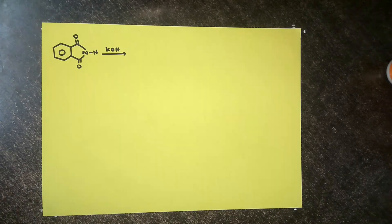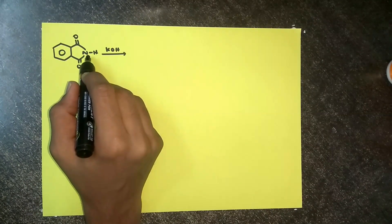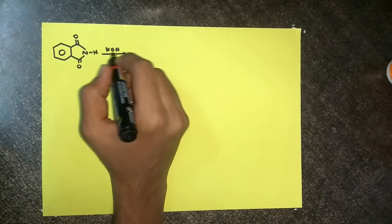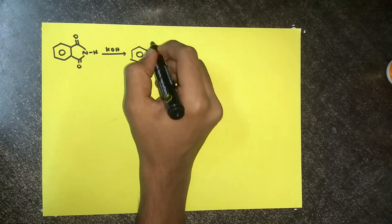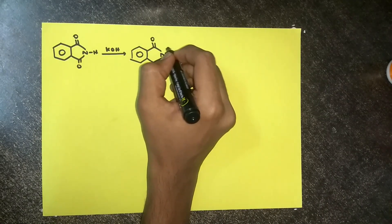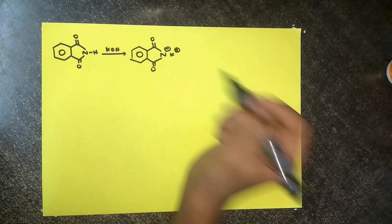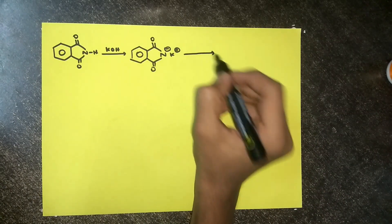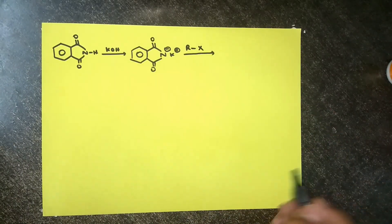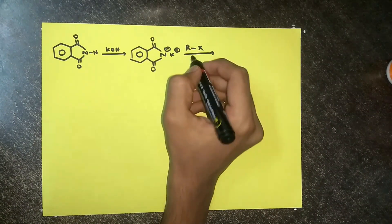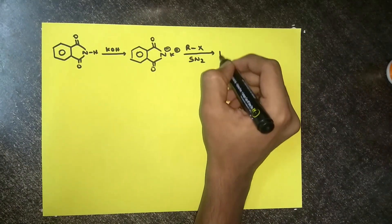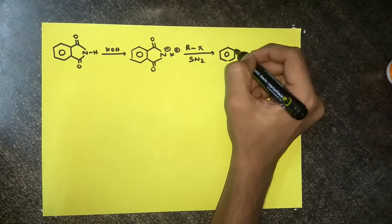Now let's look at the second part of the reaction. In this reaction, we will use the phthalimide formed to convert it into an amine. As the nitrogen here is slightly acidic, we are going to use a strong base to extract this — for example, KOH. This OH- is going to extract the hydrogen and form N-. Now we react this with an alkyl halide. This nitrogen with a negative charge is going to act as a nucleophile and this reaction is SN2. It's going to form an alkyl phthalimide.